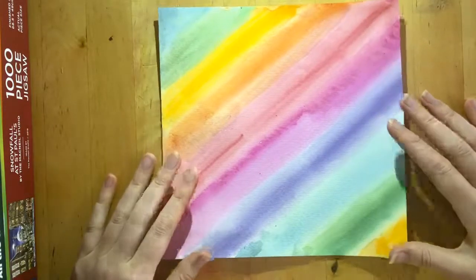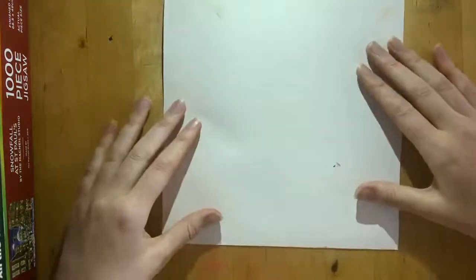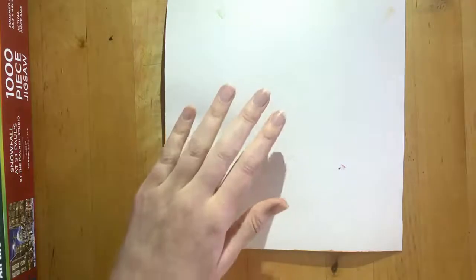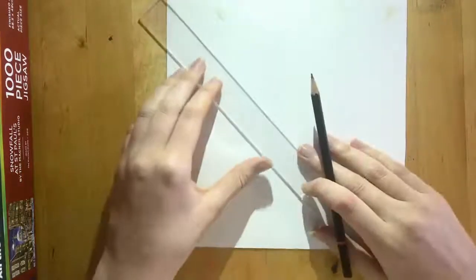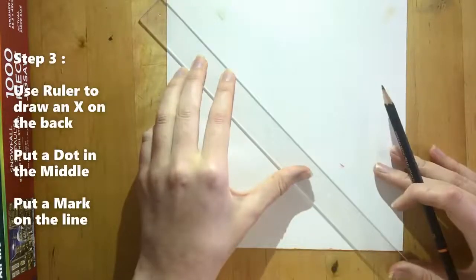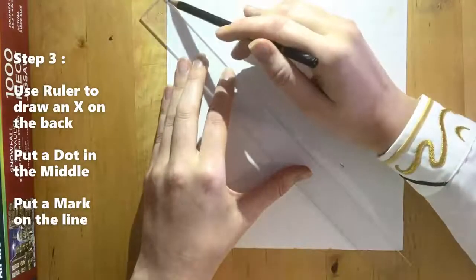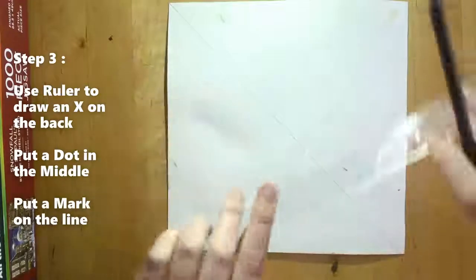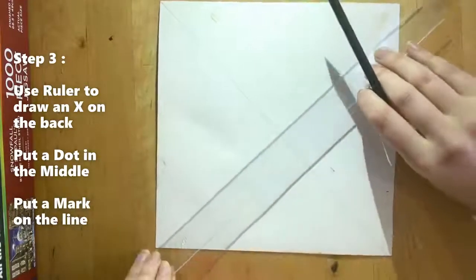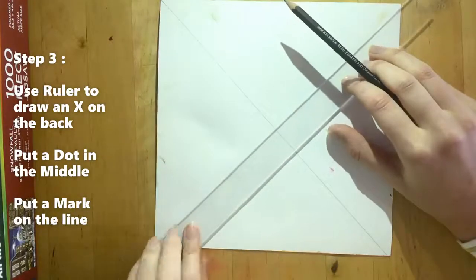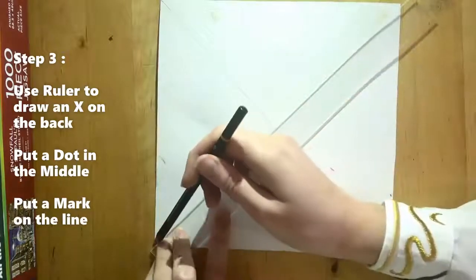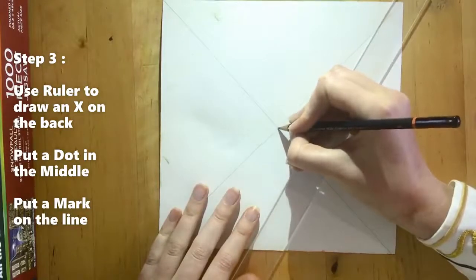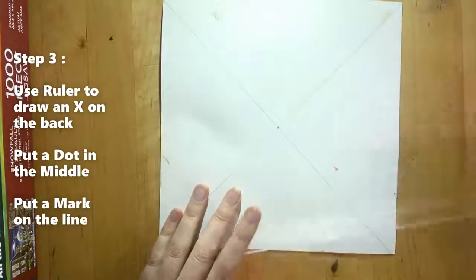Now I'm going to flip it over. I'm going to do some lines in the back. So I'm going to get diagonal lines across so I can mark the center. So I want to get right in the corners and make a big X. Here we go.